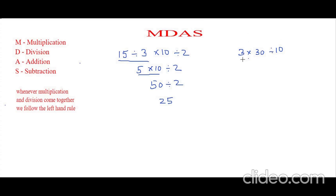So now we are going to apply the left-hand rule. We are going to multiply first and then divide. So 3 times 30, which is 90, divided by 10, which gives us 9. Isn't it easy?